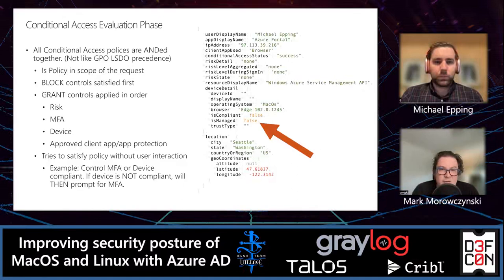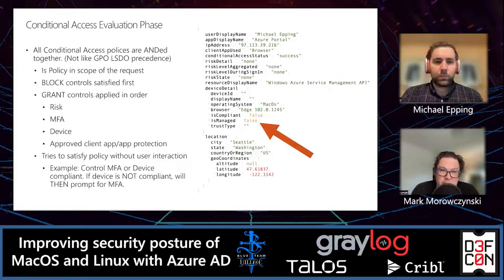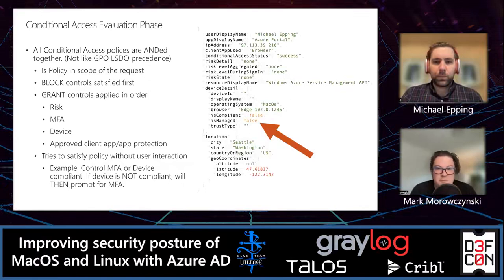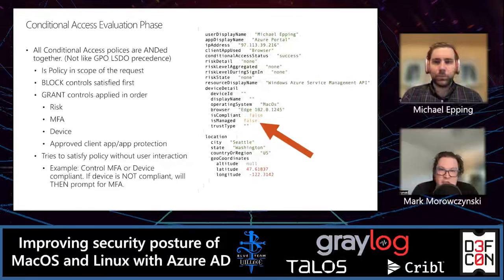Conditional Access will try to satisfy the policy without requiring user interaction where possible. If a policy says 'MFA or compliant device' and the user isn't on a compliant device, they'll be prompted for MFA. In the example shown, Michael tried to log into the Azure Portal from a non-compliant device — 'isCompliant' was set to false, controlled via Intune. It's really important that defenders understand what Conditional Access policies apply to macOS and Linux clients in their environment.